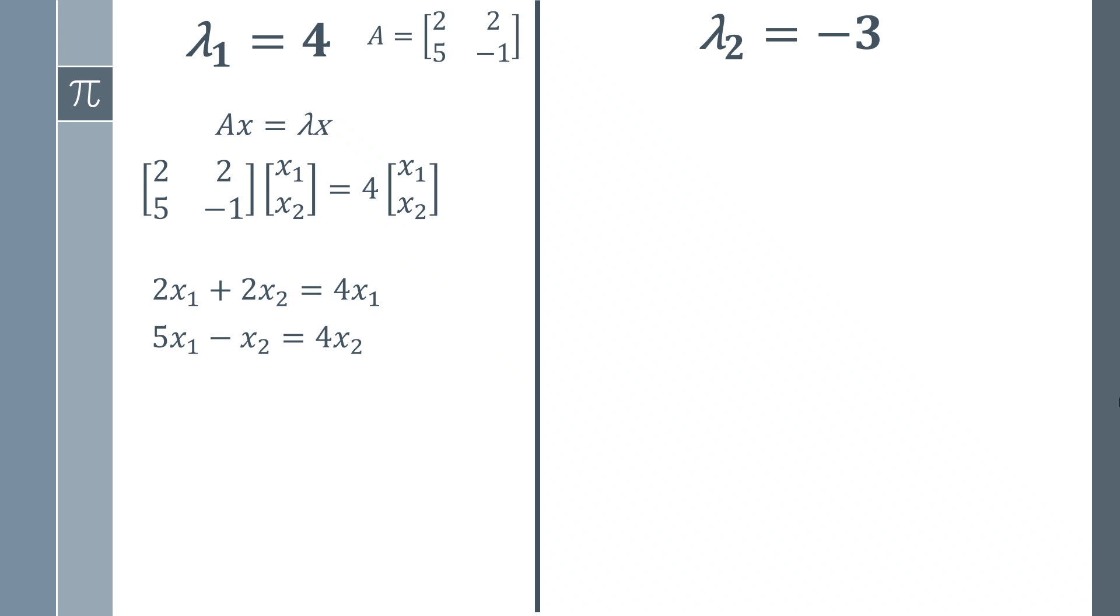For the second equation, if we add x₂ to both sides we get something very simple. So 5x₁ = 5x₂ or in other words x₁ = x₂. So we get an eigenvector that looks like [1, 1] because x₁ = x₂. We could of course have [2, 2], [3, 3], [4, 4], [5, 5]. All of those would work but our eigenvector of [1, 1] is going to be our starting point there.